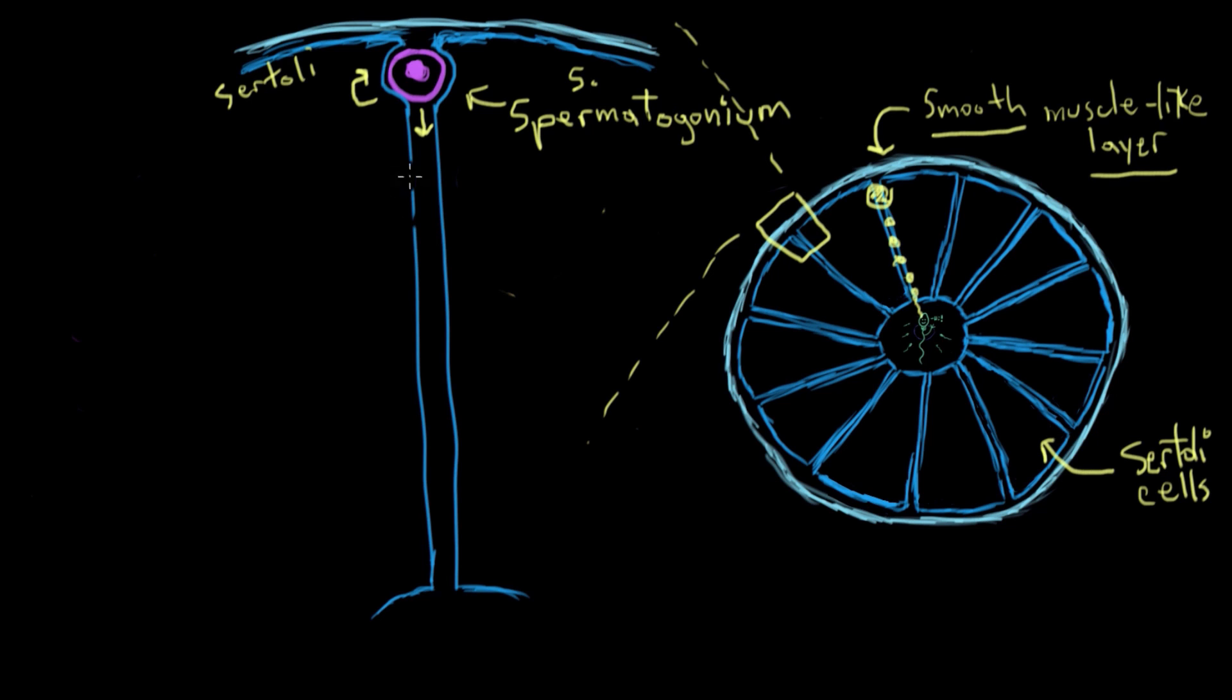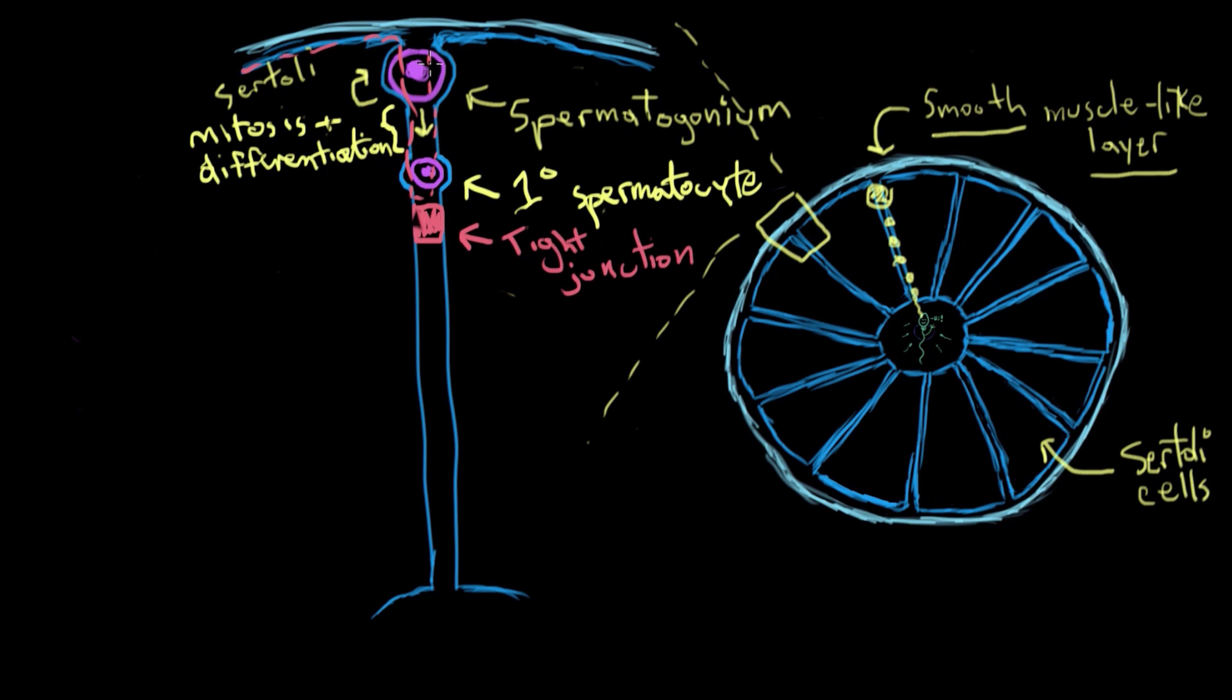Let's officially start here. Our spermatogonium will divide via mitosis and one of the daughter cells will differentiate into a primary spermatocyte. The other is going to revert back to being a germ cell, a spermatogonium. This primary spermatocyte has to cross over this linkage between the two Sertoli cells. That's called a tight junction. The tight junction effectively creates two compartments. One up here, that's called the basal compartment. Basal because it's closest to the base or the basal region of the Sertoli cells.